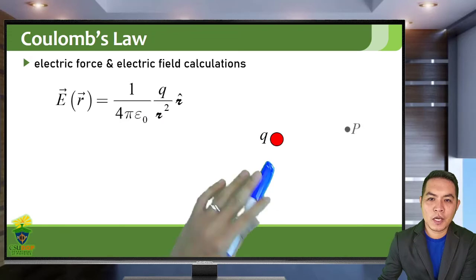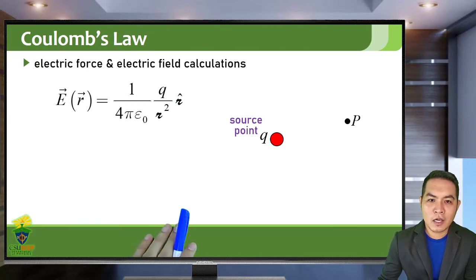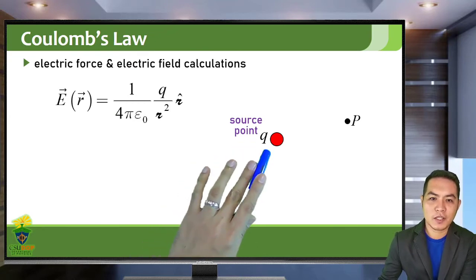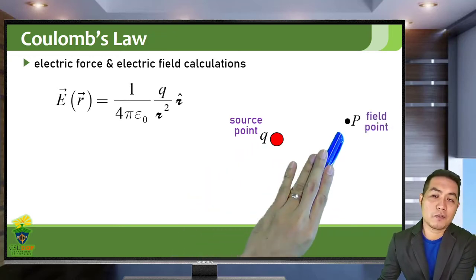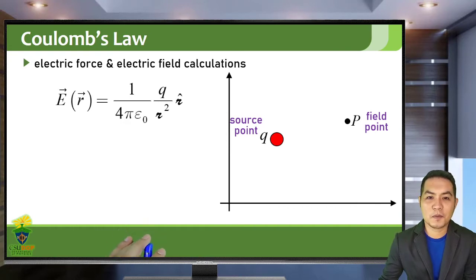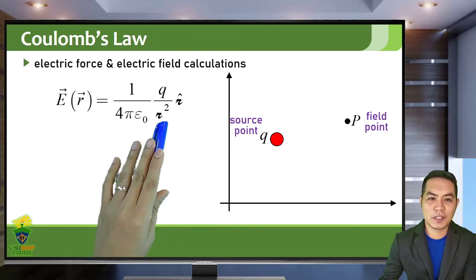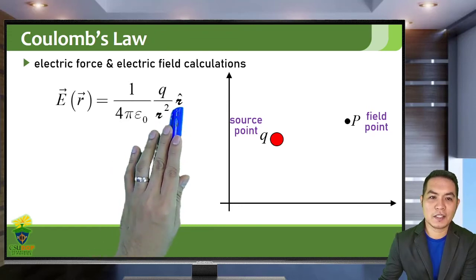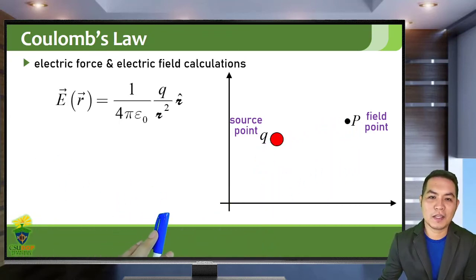If you have a point charge Q and you want to find the electric field at a certain point P, we call the location of your point charge the source point, and the location where you want to find the electric field is called the field point. In your Physics 41 subject, you always assumed that your source point is at the origin, such that if you measure the separation distance and its unit vector, you just get that distance automatically.